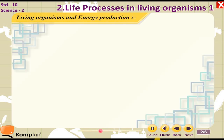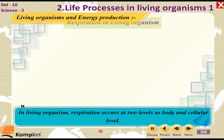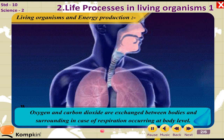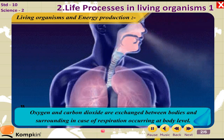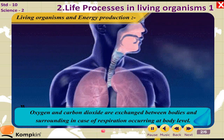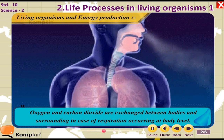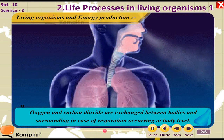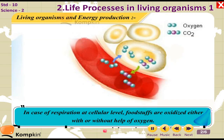In living organisms, energy production involves respiration occurring at two levels: the body level and the cellular level. Oxygen and carbon dioxide are exchanged between the body and its surroundings in the case of respiration at the body level. At the cellular level, foodstuffs are oxidized either with or without the help of oxygen.